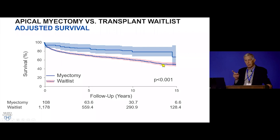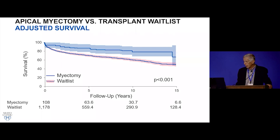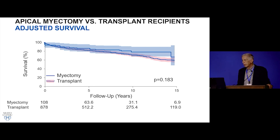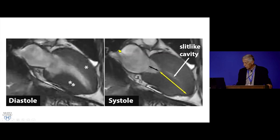Remember that when you refer a patient for transplant, they don't always receive one. We also compared transapical myectomy outcomes to patients who actually received a cardiac transplant. In adjusted survival analysis, the patients who had the conventional enlargement operation had survival at least as good as those who received a cardiac transplant. Not every patient is class one afterwards, and a few have gone on to transplant, but for many patients it eliminates the need for transplant.